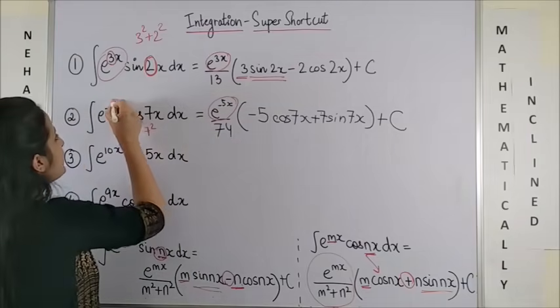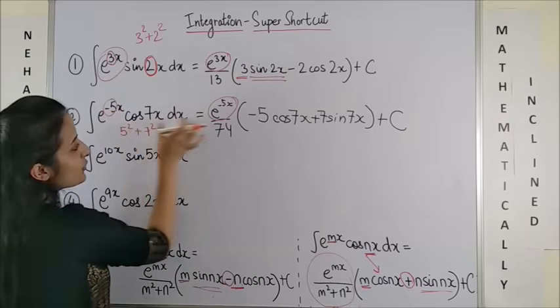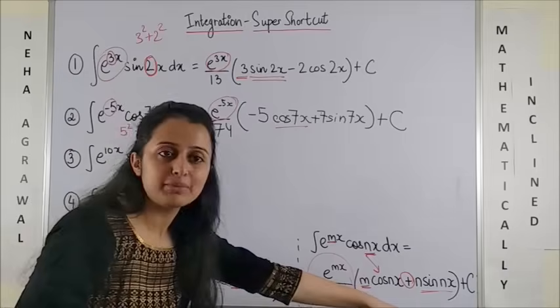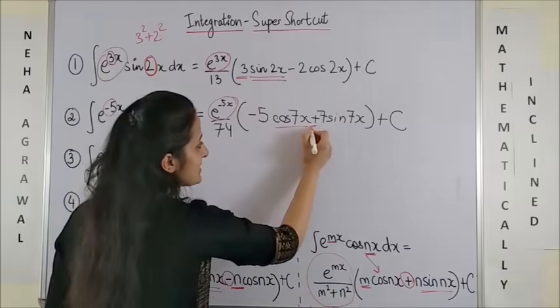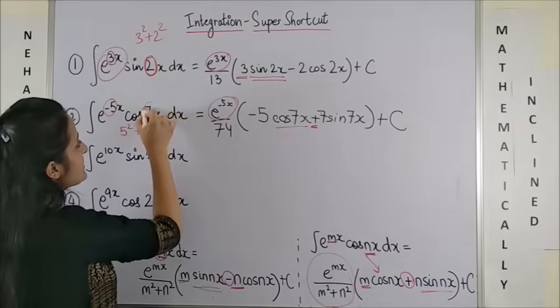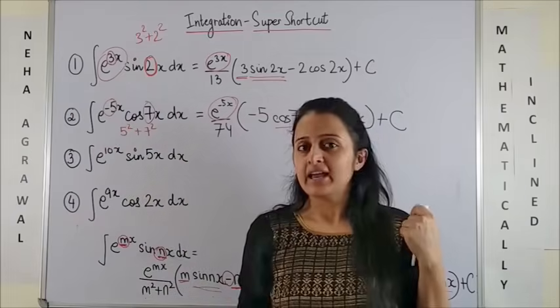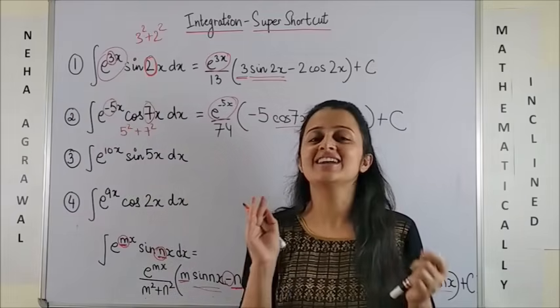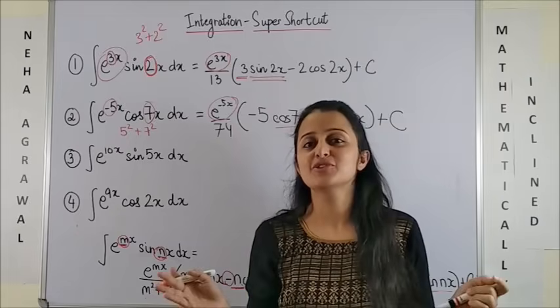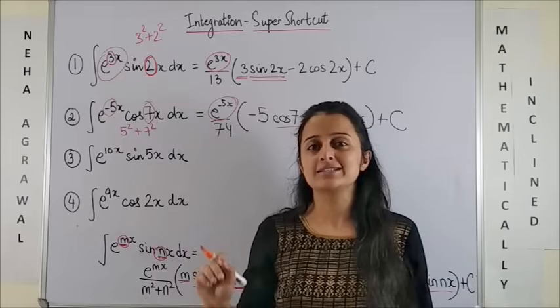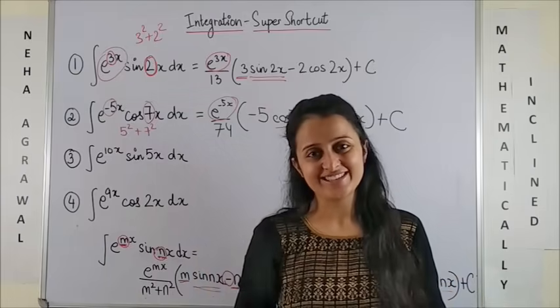And next, we write this minus 5 into cos 7x as it is. And with the cos function, we had a plus sign. So plus and then you copy this 7 into sin 7x plus c. It will of course take a little bit of practice. But you would remember the formula. And then trust me, you would write these answers in less than 5 seconds.